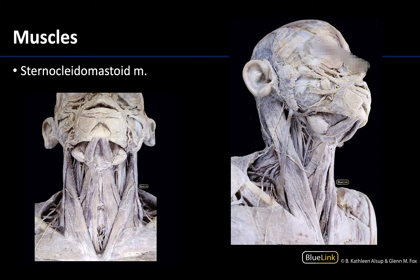Moving to muscles of the neck, the first muscle that is easily identifiable and helps you get your bearings is the sternocleidomastoid. Starting with this posterior lateral view, it is a very prominent, rope-like or large strap-like muscle extending all the way up from the mastoid process of the skull down to the clavicle and sternum. You can see the external jugular vein traveling obliquely and superficial to the sternocleidomastoid — a very dominant feature in the anterior neck. Here you can see both sternocleidomastoid muscles and that external jugular vein.